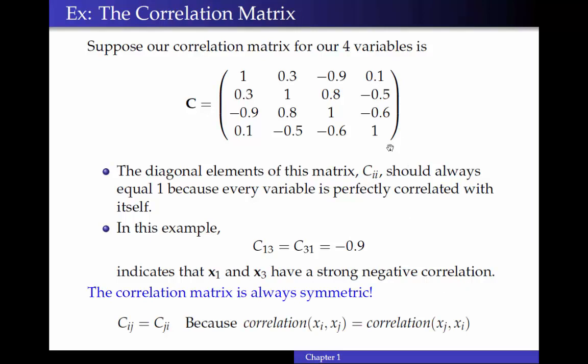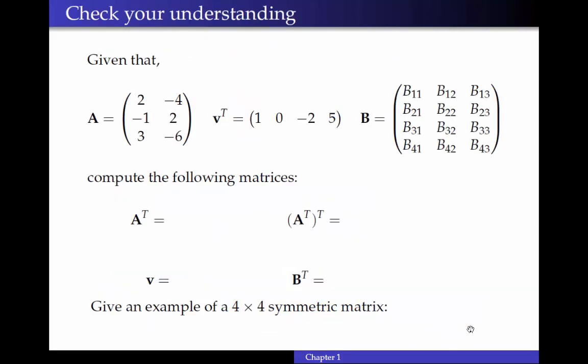And the correlation matrix is always going to be symmetric, right? Because Cij will always be equal to Cji. Because the correlation between xi and xj doesn't change if I change the order of xj and xi.